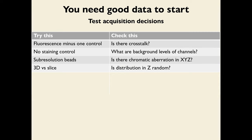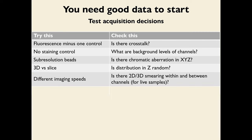You also need to try 3D versus a single slice — this explicitly tells you whether the Z-distribution is random and whether a single slice captures the behavior as well as a full 3D image. You can try different imaging speeds, particularly for live samples, to check for 2D or 3D smearing within or between channels, which depends on imaging speed relative to how fast things are moving in your sample.